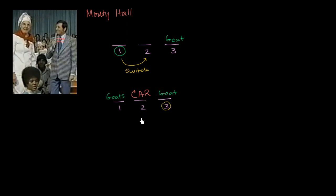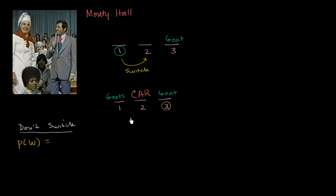Now let's think about the probabilities given the two strategies. If you don't switch — if you always stick to your first guess — what is your probability of winning? There are three doors, and the prize is equally likely to be behind any one of them. One out of three possibilities has the outcome you desire, so your probability of winning is one-third. Likewise, your probability of losing is two-thirds, and these add up to one.